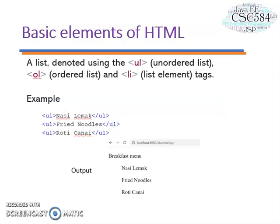Now let's look at a list. So there are various ways of HTML tags to list your options in web pages. In the example, we use unordered list to display breakfast menu on the web.